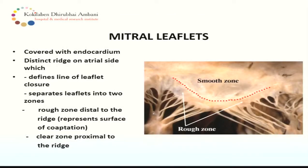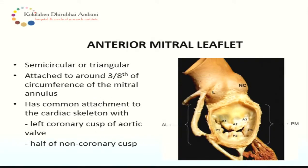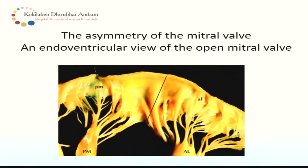The leaflets are covered by endocardium, and there is a distinct ridge on the atrial side — visible as a red dotted line. This defines the line of closure and separates the leaflet into two zones: the rough zone, which is distal to the ridge and represents the surface of coaptation, and the clear zone, which is proximal to the ridge. The anterior mitral leaflet is semicircular-triangular and attached to three-eighths of the circumference of the mitral annulus. It has a common attachment to the cardiac skeleton, especially the left coronary cusp of the aortic valve and half of the non-coronary cusp. The mitral leaflets are not symmetrical — they are pretty asymmetrical, as shown in this endo-ventricular view where chordae in the middle part of the AML are crossing the midline.